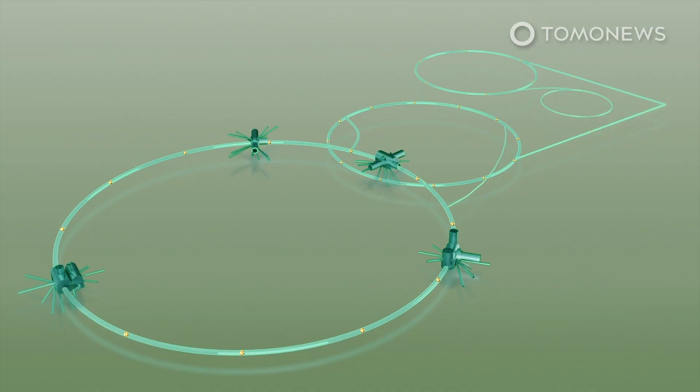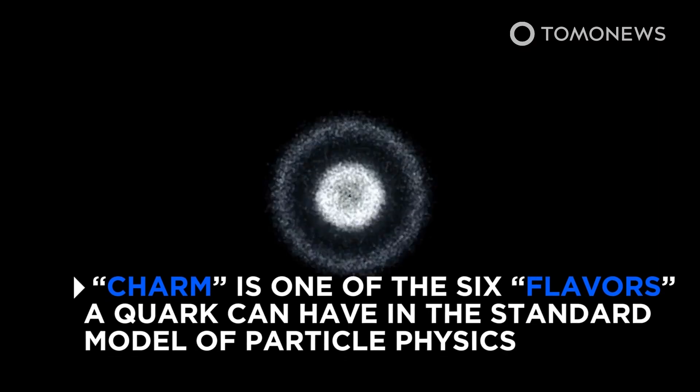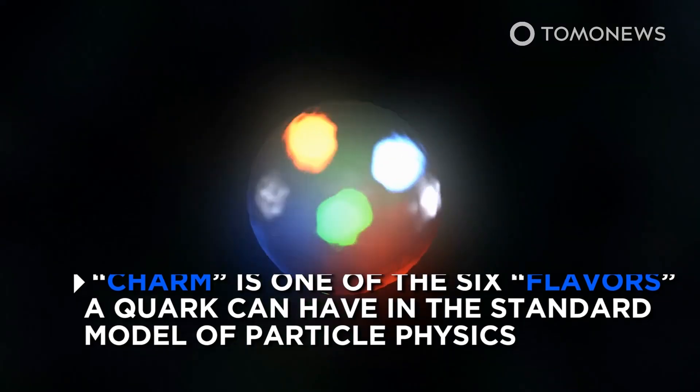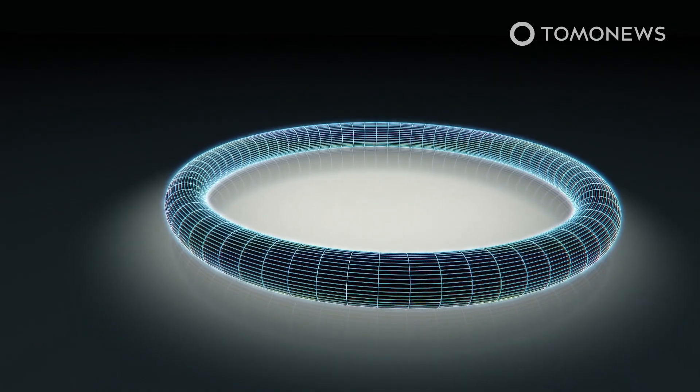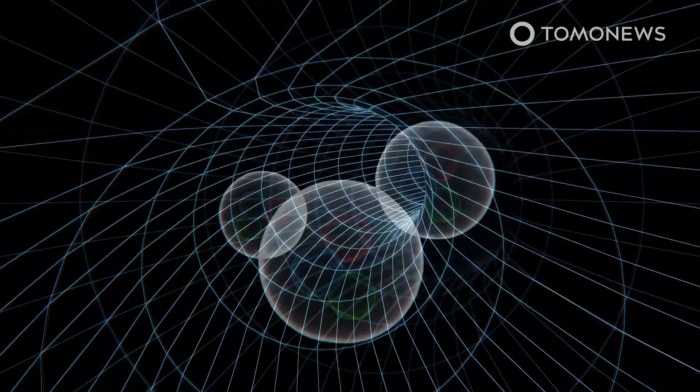According to the study in the archive preprint server, the particle is made of two charm quarks and two charm antiquarks. Charm is one of the six flavors a quark can have in the standard model of particle physics.